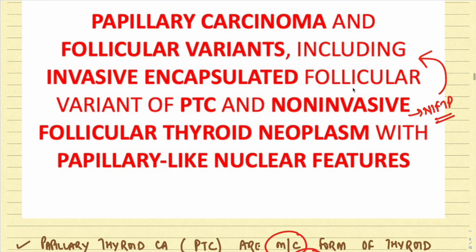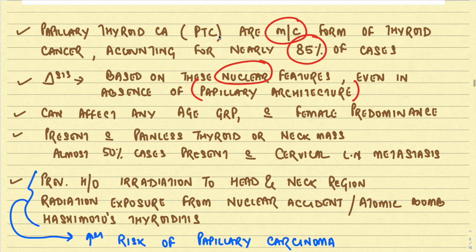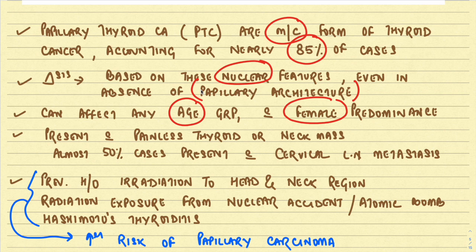NIFTP and the follicular variant of papillary thyroid carcinoma come under PTC because even though these tumors have follicular architecture, the nuclear features are very much like papillary thyroid carcinoma. Papillary thyroid carcinoma can affect any age group but usually affects younger individuals compared to other thyroid cancers, with a female predominance. It presents with a painless thyroid or neck mass, and almost 50 percent of cases present with ipsilateral cervical lymph node metastasis.